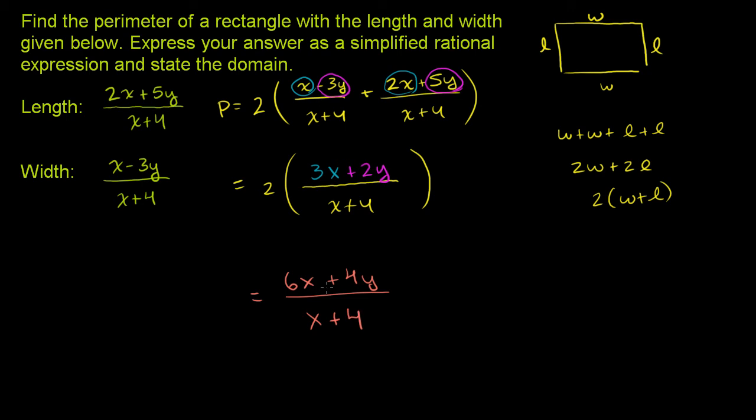There's really no way to simplify this anymore. We had the 2 factored out, and 3x + 2y has no common factors. It's not going to cancel with x + 4.